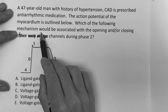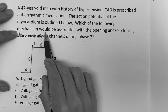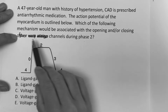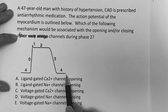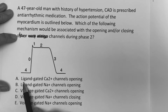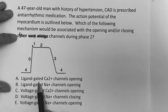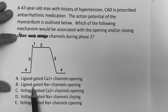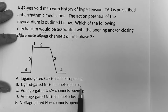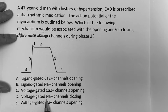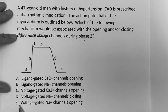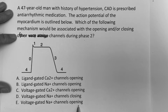The question reads: which of the following mechanisms would be associated with the opening and closing of channels during phase two? The answer choices are: A, ligand-gated calcium channels opening; B, ligand-gated sodium channels opening; C, voltage-gated calcium channels opening; D, voltage-gated sodium channels closing; E, voltage-gated sodium channels opening?